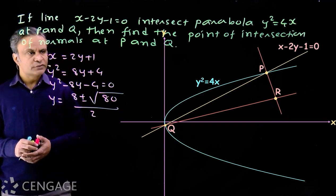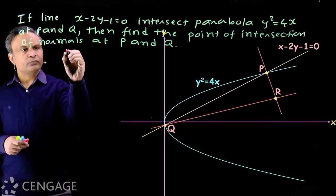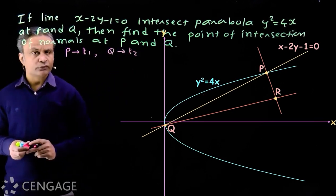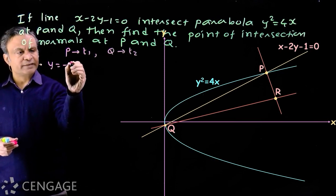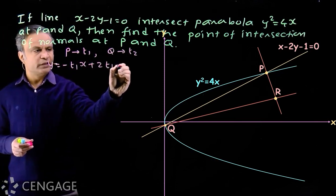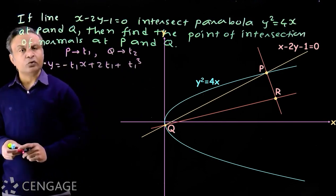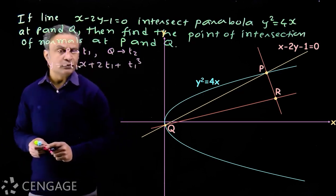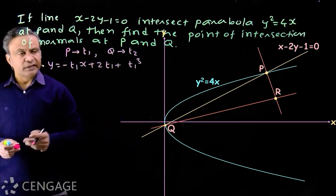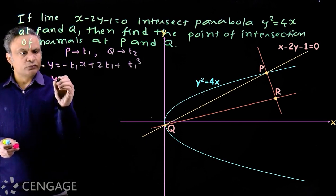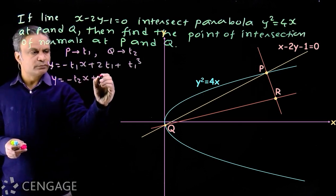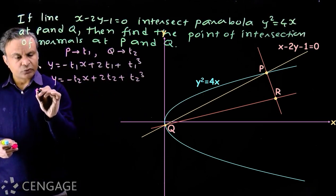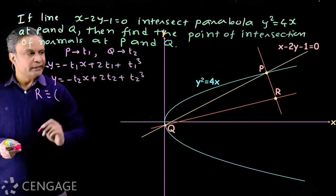So we use another method. Suppose the parameter of point P is t1 and of Q is t2. The equation of normal at P to the parabola is y = −t1·x + 2t1 + t1³, where a = 1 since y² = 4x. Similarly, the equation of normal at Q is y = −t2·x + 2t2 + t2³.